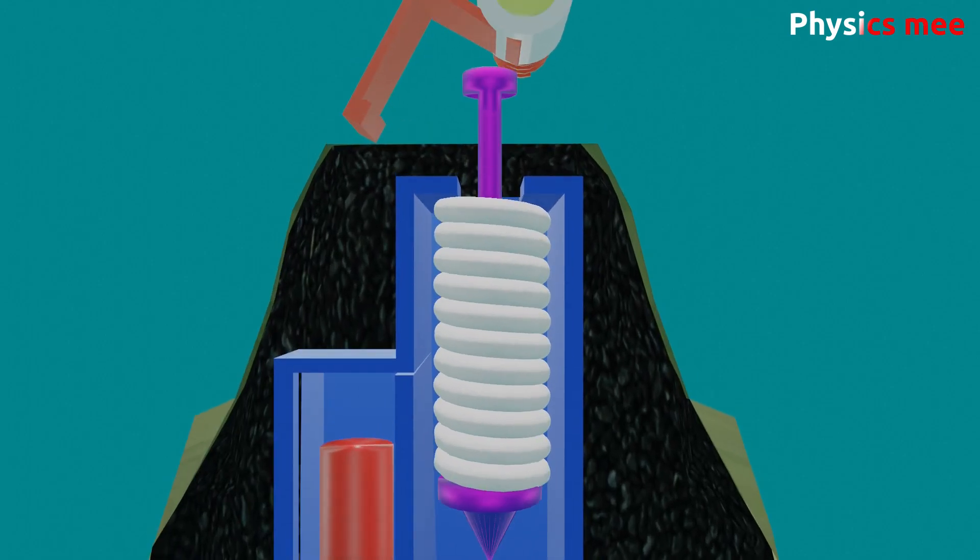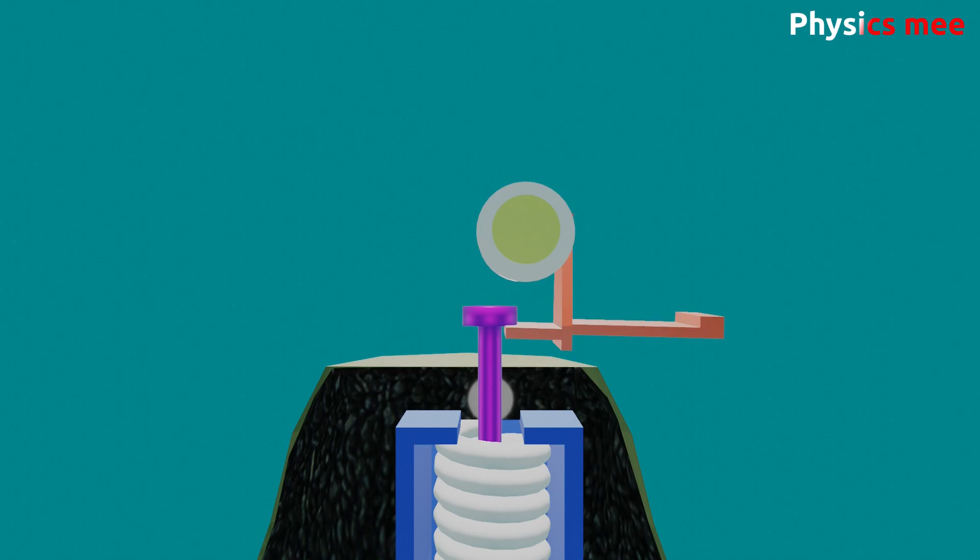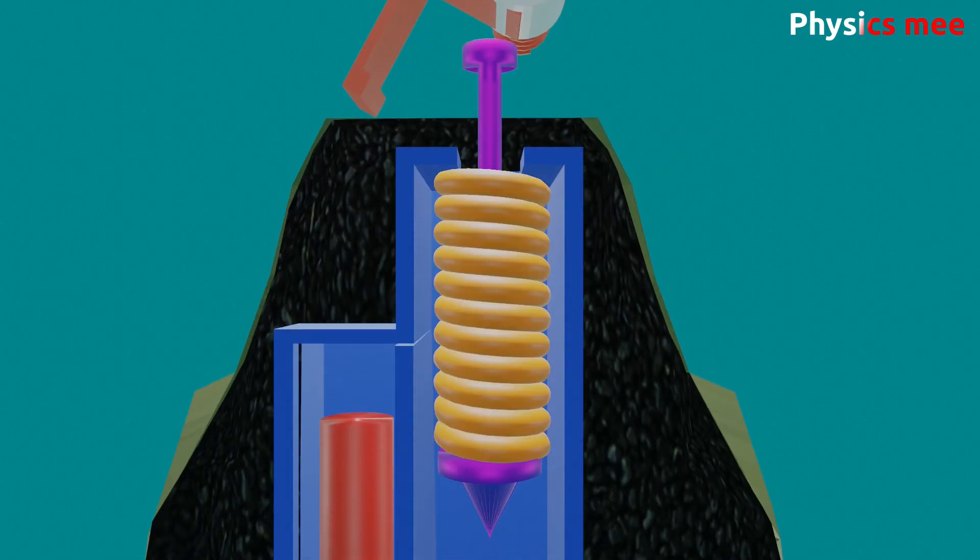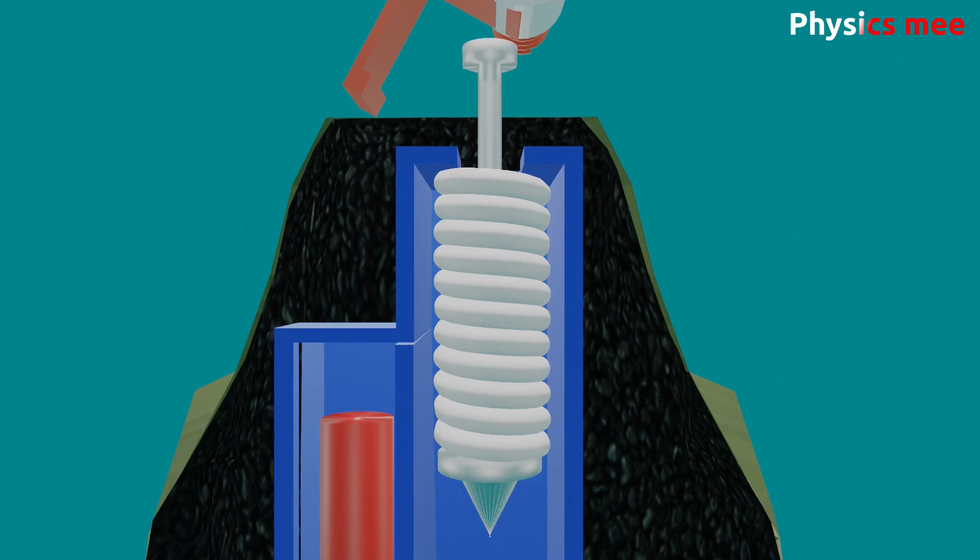At the same time, this striker also becomes free, and due to the tension of the spring, it strikes the primer placed at the bottom.